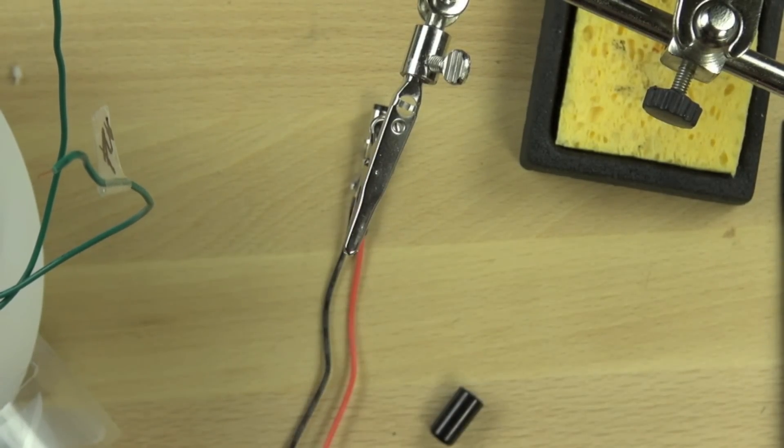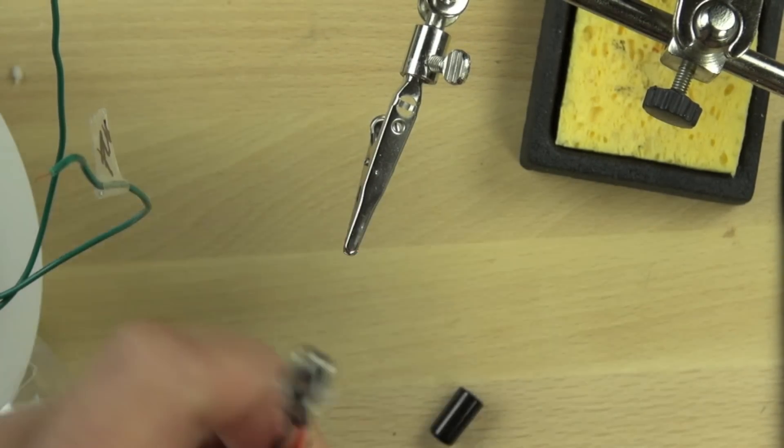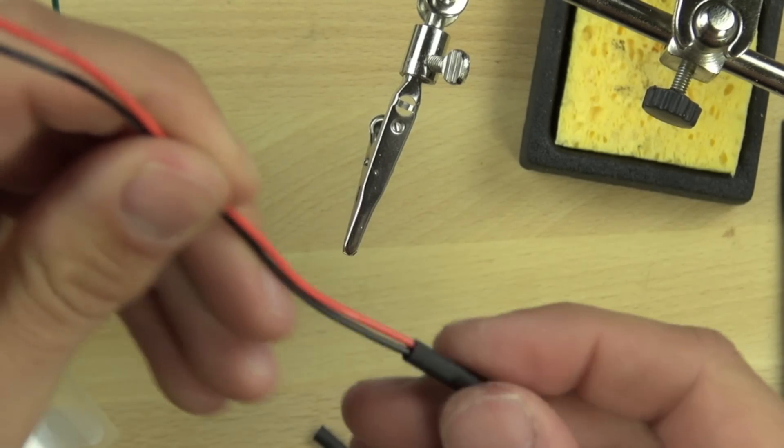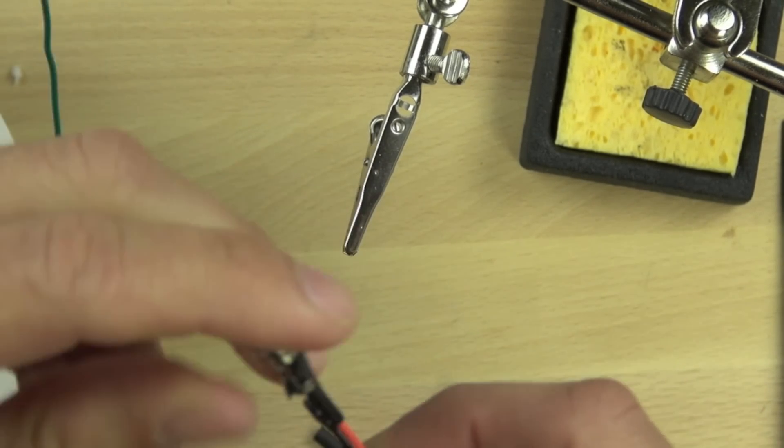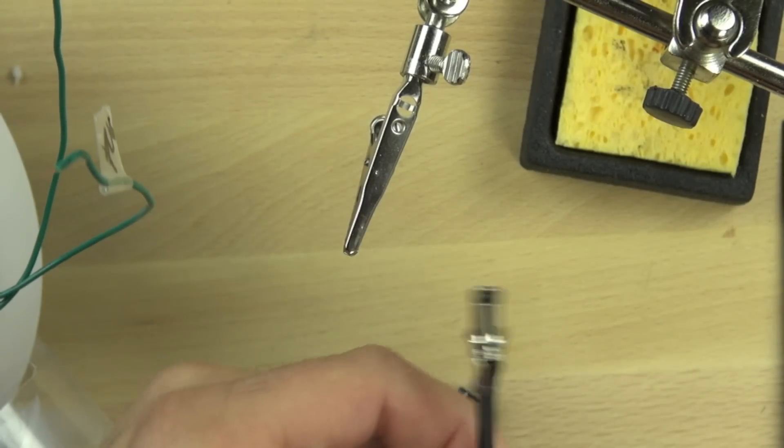We're going to take a piece of shrink wrap tubing and slide it up the wires to the connector. This will help provide a nice snug fit against our final piece.